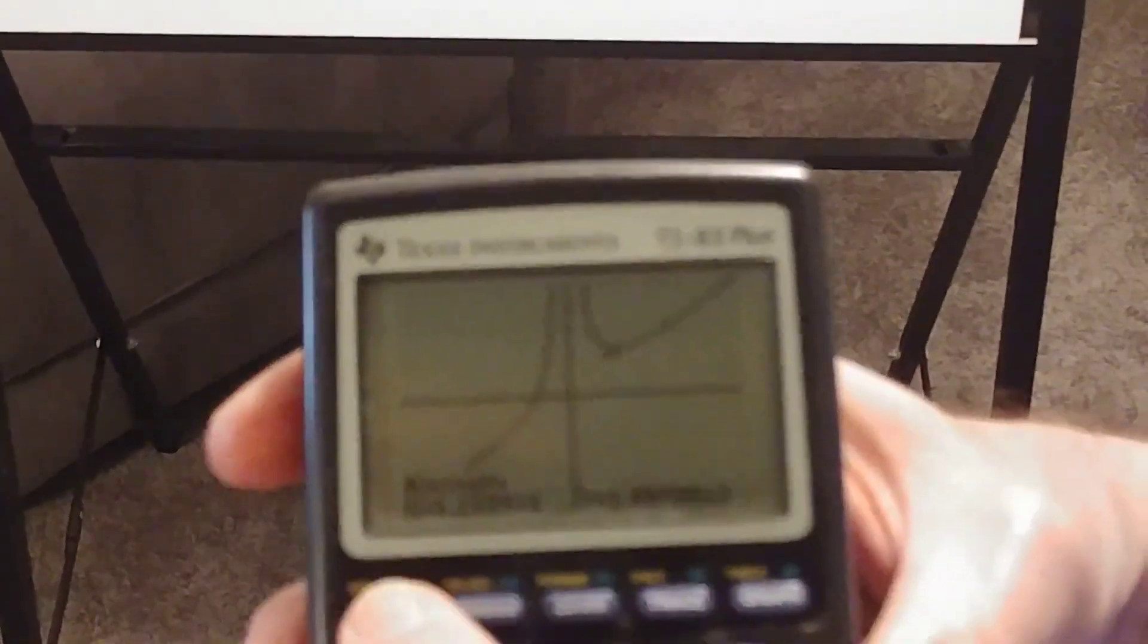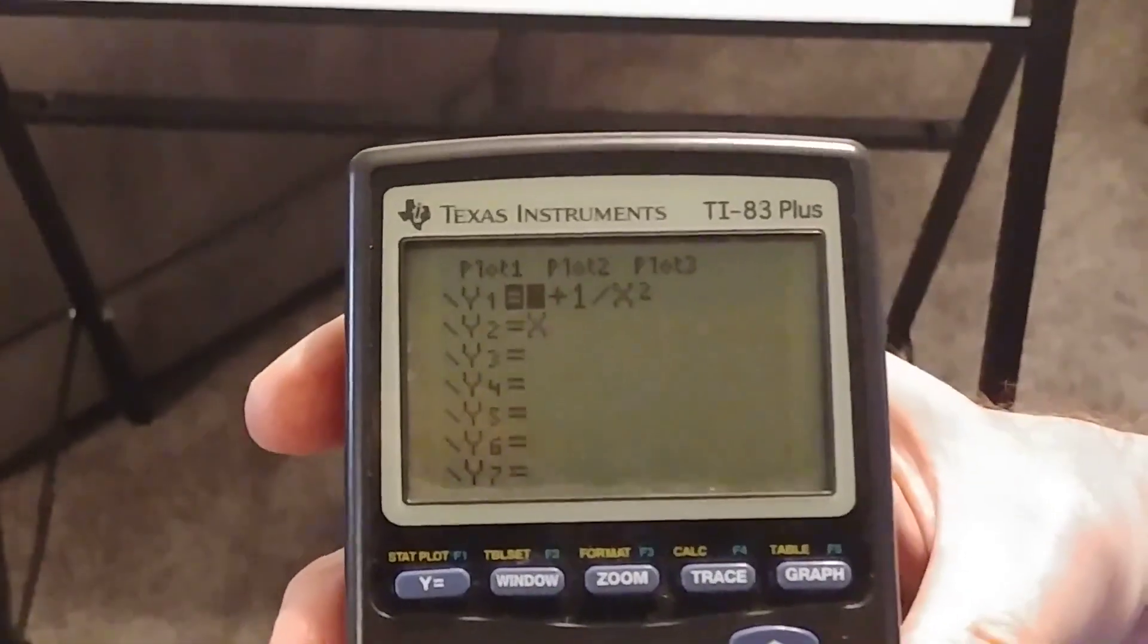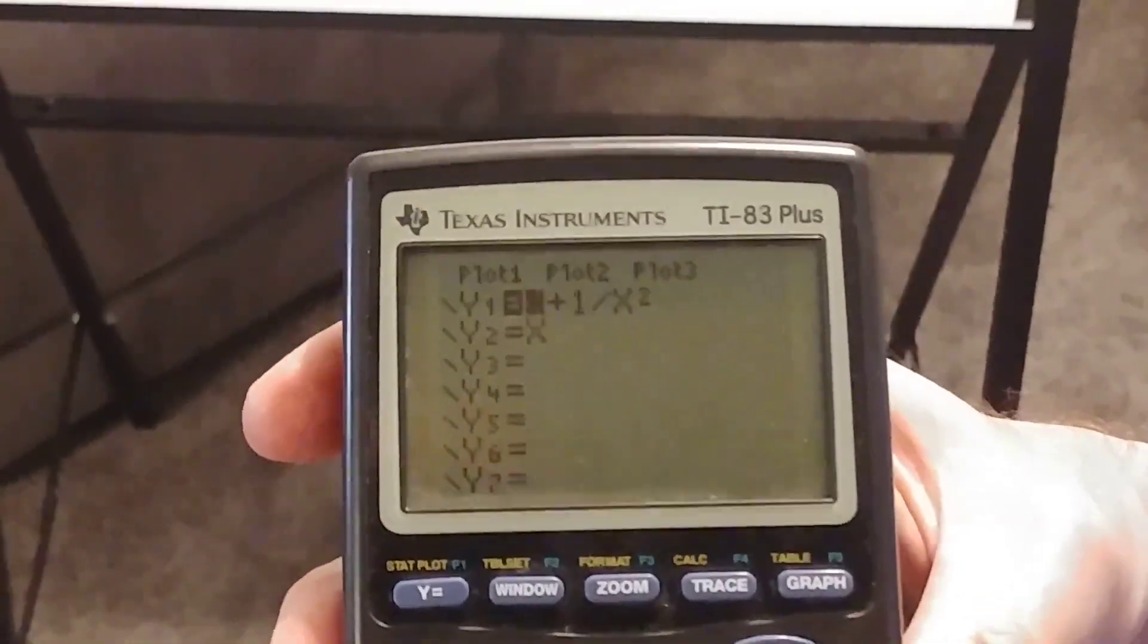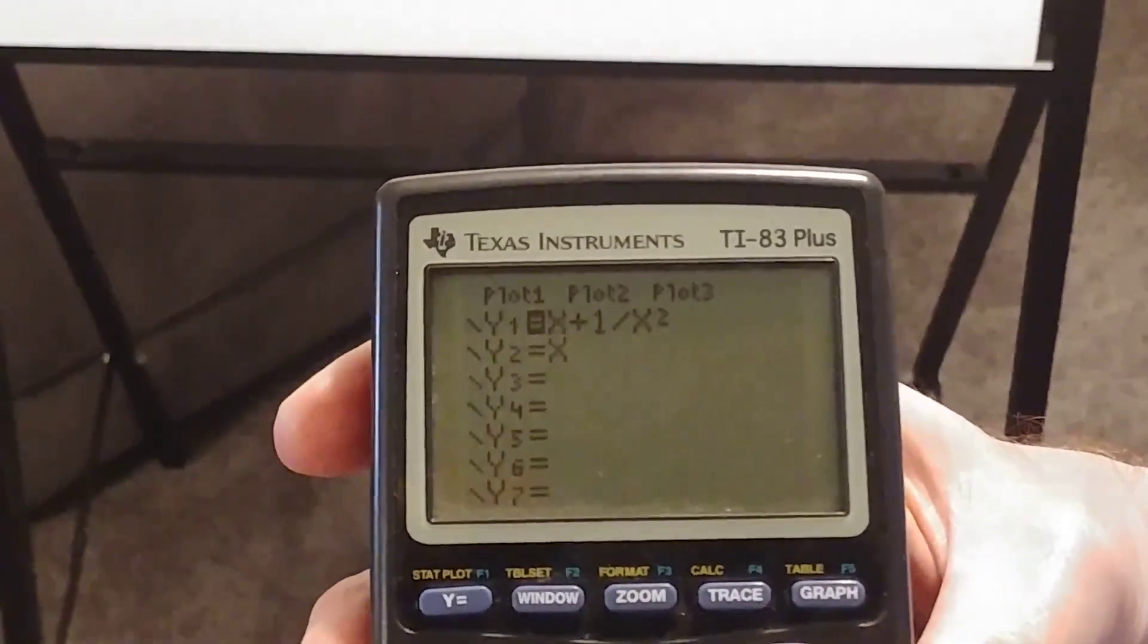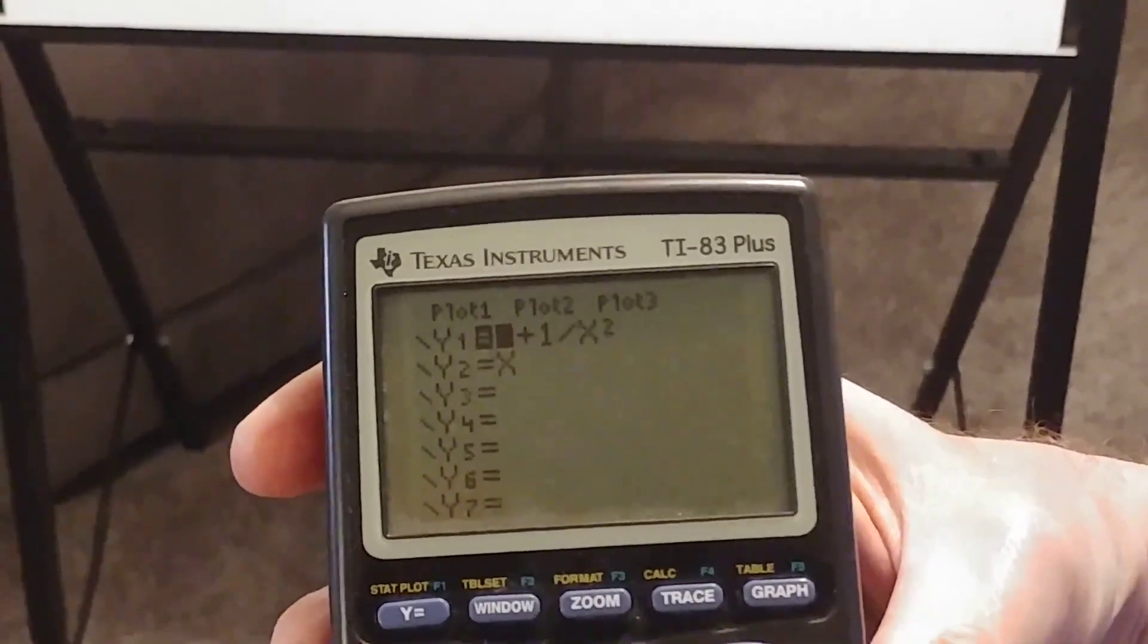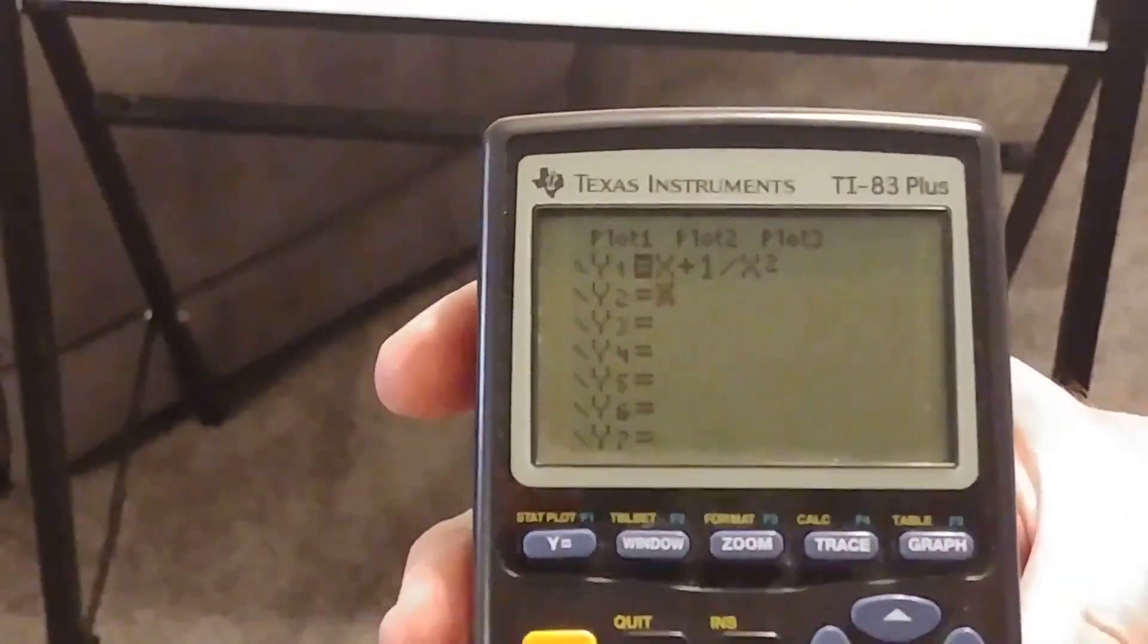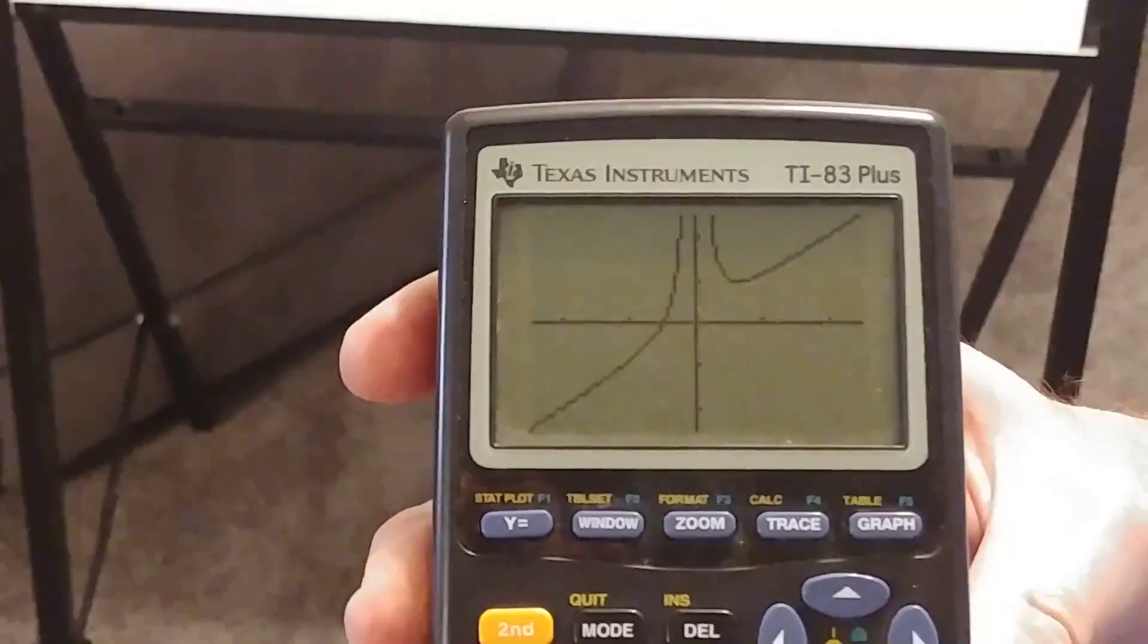Now notice that this equation here is virtually the same as y equals x when x is not close to 0, because when x is close to 0, 1 over x squared becomes infinite. So if I graph y equals x it should be very close to that graph.